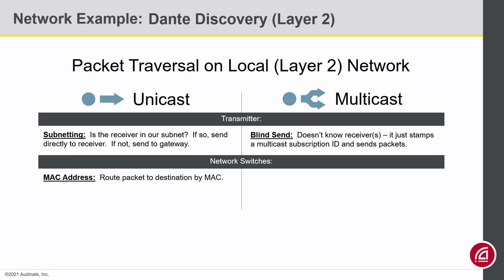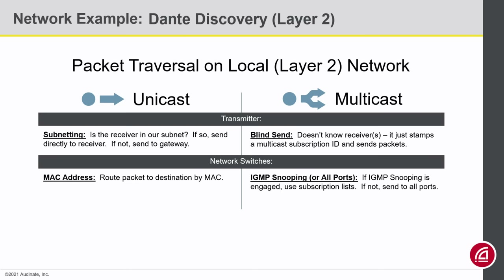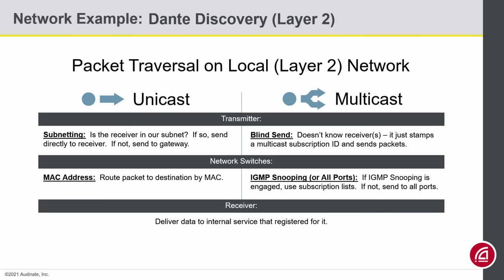In a layer 2 space, all of this will really move by a MAC address. In unicast, the MAC address is listed right on the packet. With multicast, if multicast management like IGMP snooping is engaged, then it will look for subscription requests. If there is no multicast management, the multicast just repeats to every port. Finally, once the packet arrives at the receiver, the device will see which internal service registered for this packet. Receivers expecting unicast will register for an IP port; multicast subscriptions will be relevant for the IP address and the IP port.